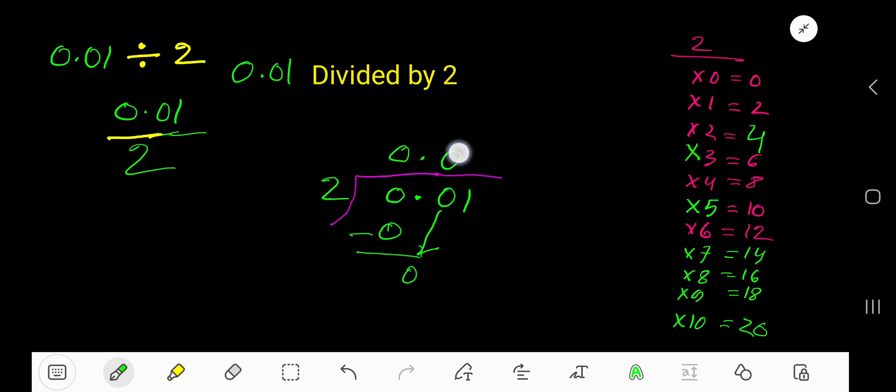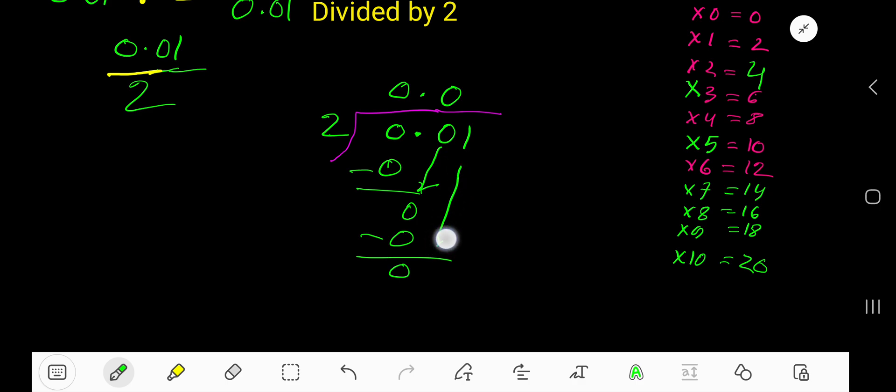0 times. 0 times 2 is 0. If you subtract, you are getting 0. Bring down this 1. 2 goes into 1 how many times? Since 1 is less than 2, so 0 times. 0 times 2 is 0.